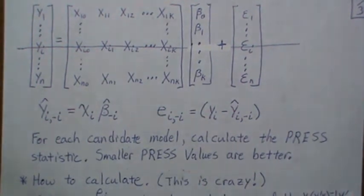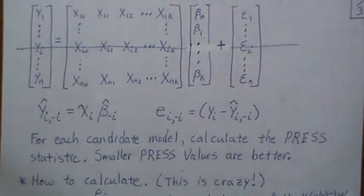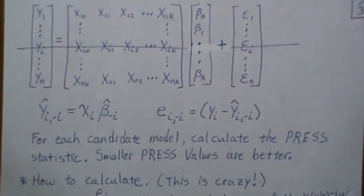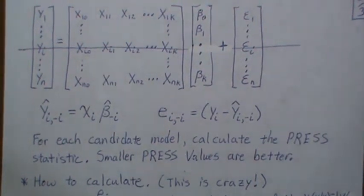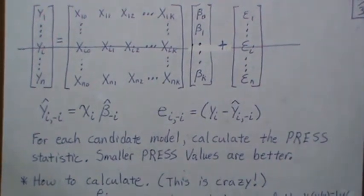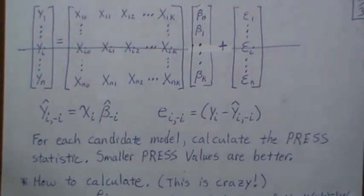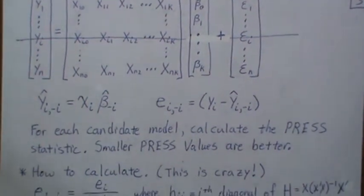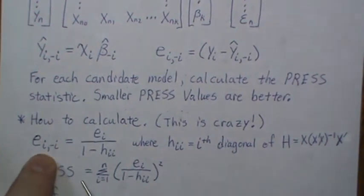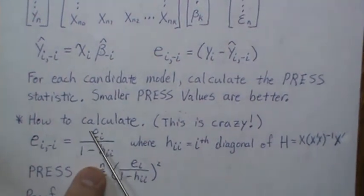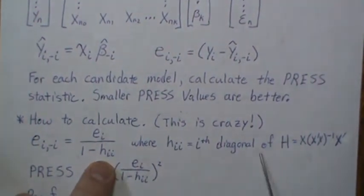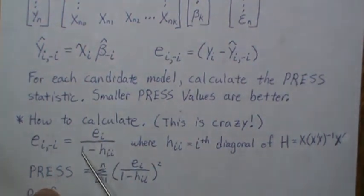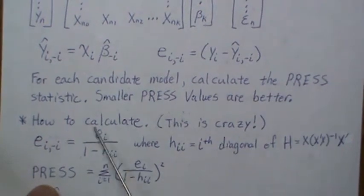Now, how do we calculate this? This is absolutely remarkable. Because this seems so labor intensive — you have to do n fits. If you have 2000 data points, you'd have to do 2000 fits. But it turns out you don't have to. You only have to fit the dataset with the full model once, and then pick pieces out of that to calculate this n-fold cross-validated PRESS statistic. The PRESS residual can be calculated from the normal residual and the H_ii diagonal of the hat matrix of the full design matrix. The PRESS statistic is then just squaring those and adding them up.